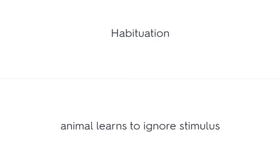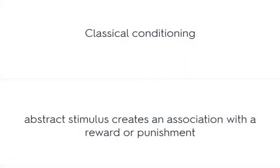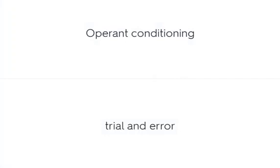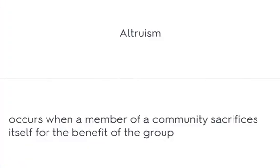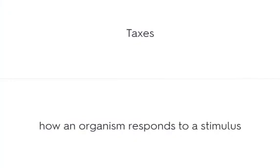Habituation: an animal learns to ignore a stimulus. Classical conditioning: an abstract stimulus creates an association with a reward or a punishment. Operant conditioning: trial and error. Agonistic behavior is a type of aggression called play fighting. Altruism occurs when a member of a community sacrifices itself for the benefit of the group. Taxes describes how an organism responds to a stimulus.